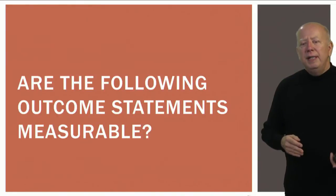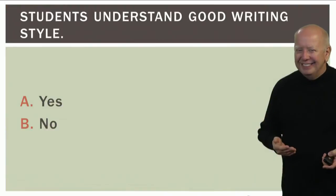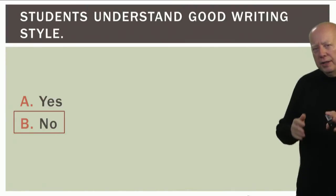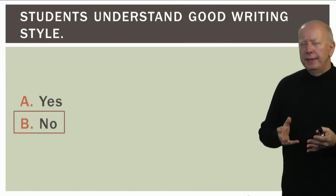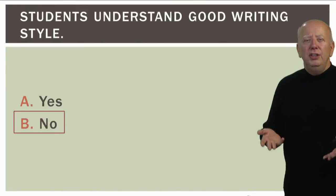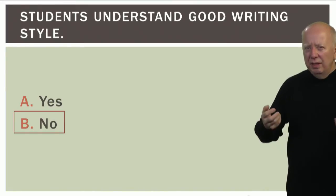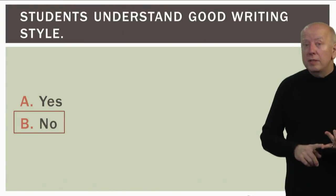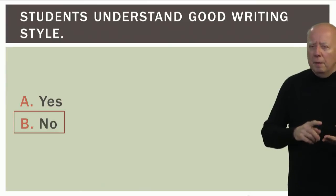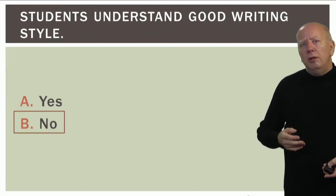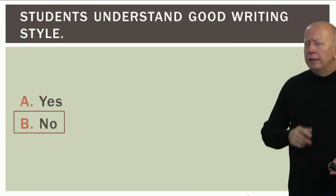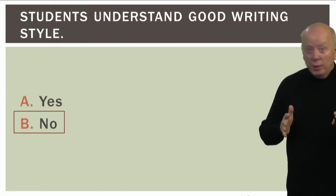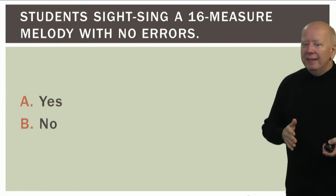Are the following outcome statements measurable? 'Students understand good writing style.' I say no, because 'understand' doesn't tell us what students are going to do to demonstrate their understanding of good writing style. It's not clear — are they going to write? Review something? So in my view, this is difficult to measure and not the best approach.